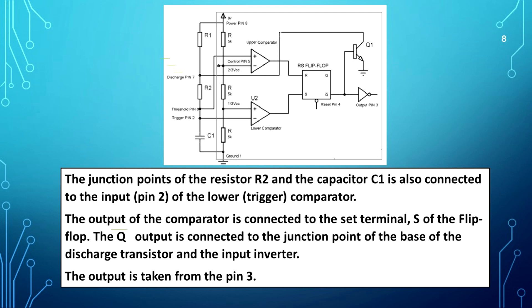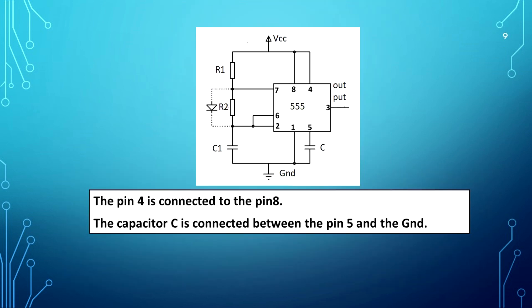The junction of resistor R2 and capacitor C1 is also connected to input pin 2 of the lower trigger comparator. The output of this comparator is connected to the set terminal S of the flip flop. The Q-bar output is connected to the base of the discharge transistor and the input inverter. The output is taken from pin 3. Pin 4 is connected to pin 8. Capacitor C is connected between pin 5 and ground.